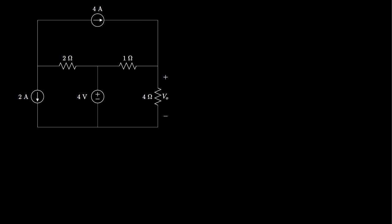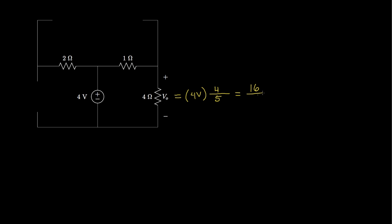Let's begin by keeping only the 4-volt voltage source in place. We'll set the 2 current sources to 0, and in that case we'll have 4 volts across the series combination of the 1-ohm and 4-ohm resistors. By voltage division, VO equals 4 volts times 4/5, which is 16/5 of a volt due only to the 4-volt source.